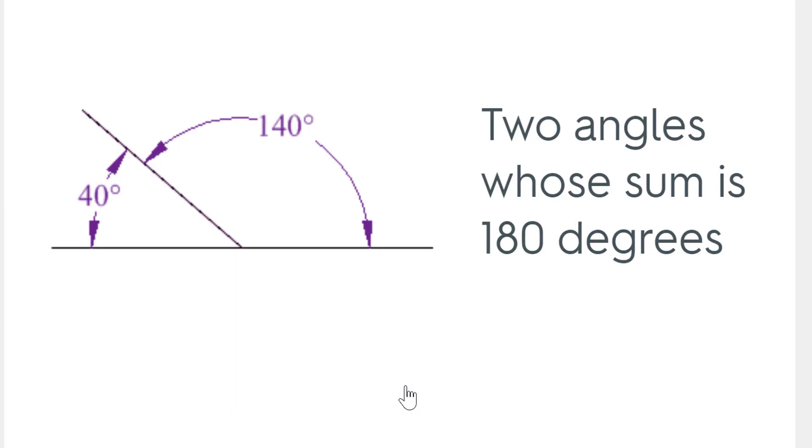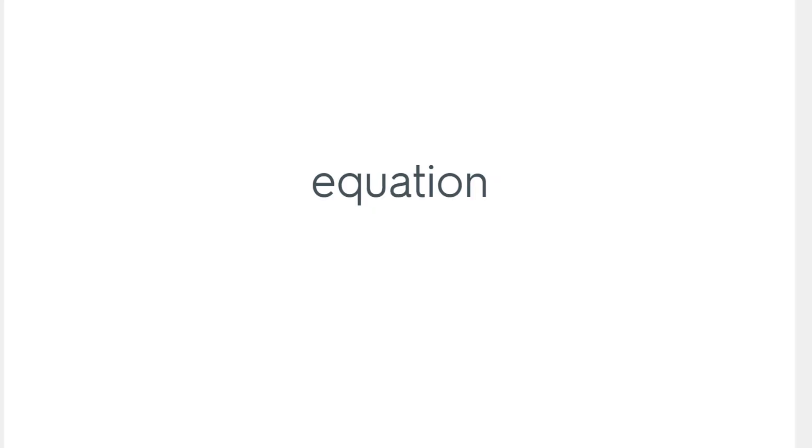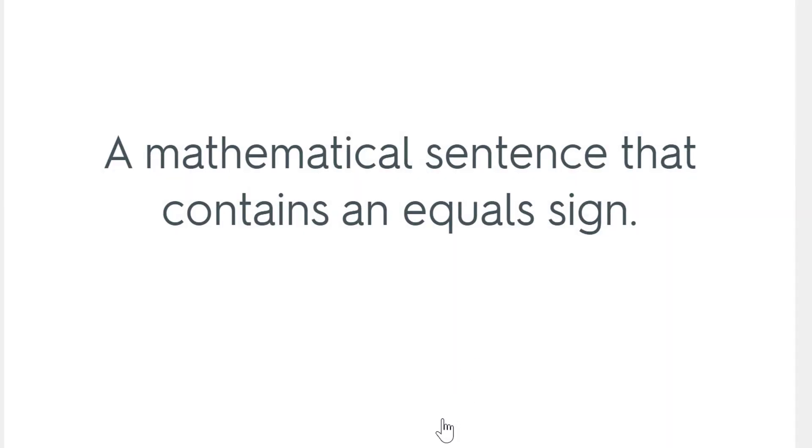We've got to know supplementary angles. Supplementary angles, two angles, they equal 180 degrees when added together. We have to know how to write an algebraic equation. It's a mathematical sentence that contains an equal sign, and we've got to be able to solve an algebraic equation when we write it.